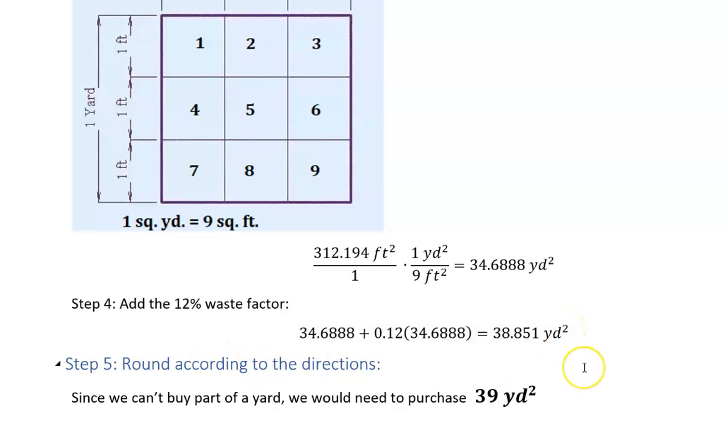But still, according to the directions, we cannot buy part of a yard. So even if this was 38.1, I would still go up to 39 because 38 wouldn't be quite enough. So I would have to say then I'm going to go out and buy 39 square yards of this carpet to complete that room.